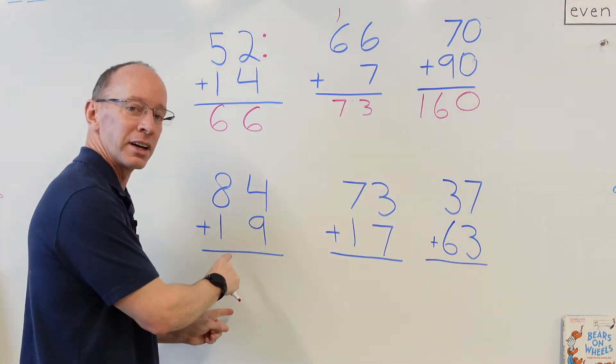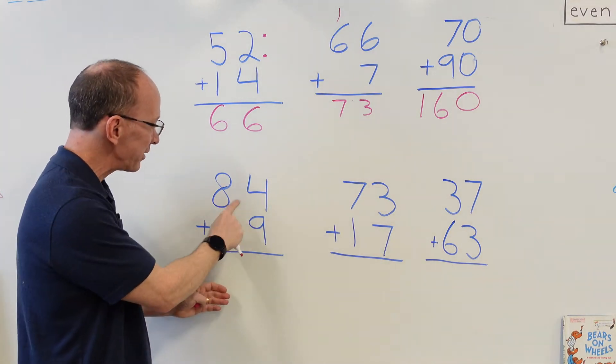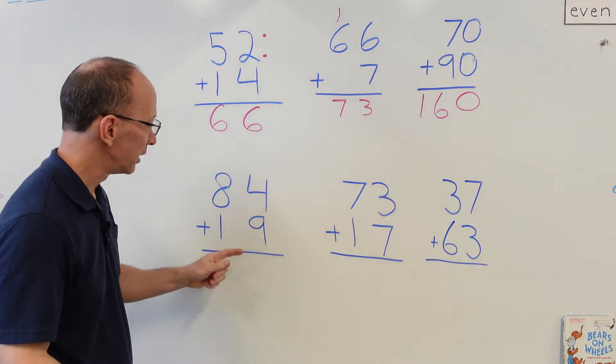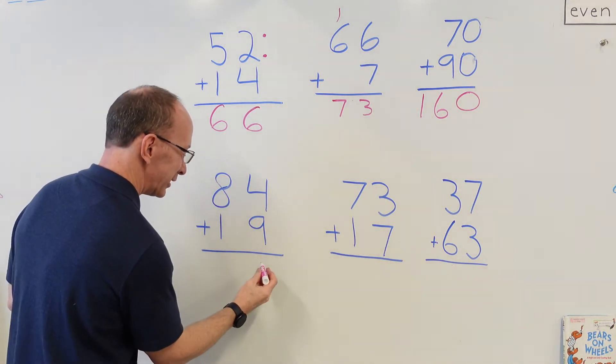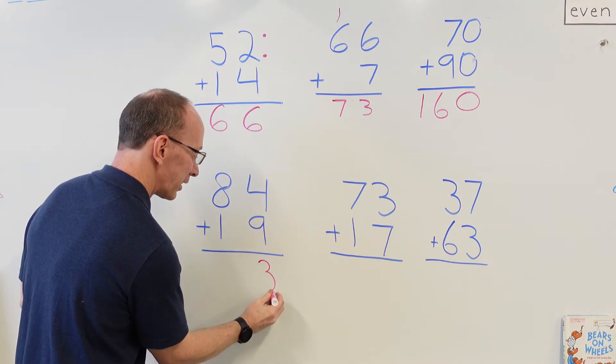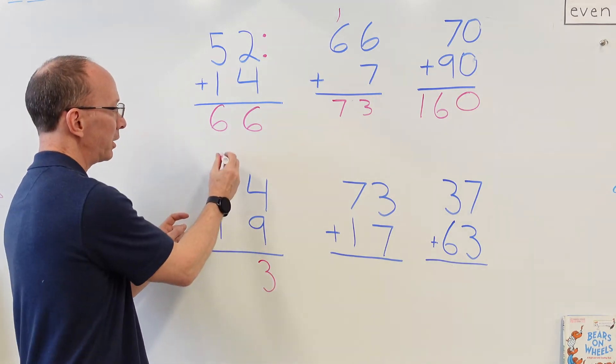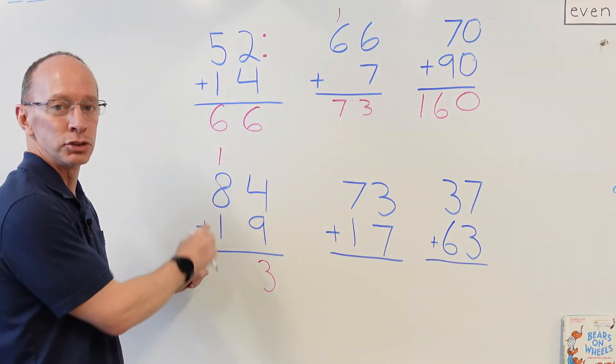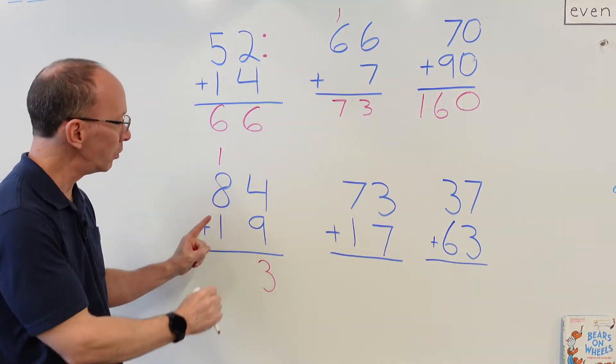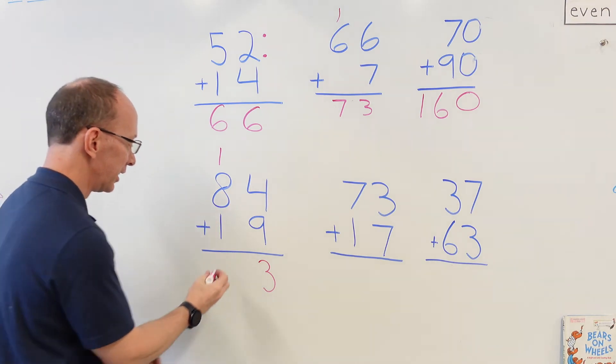All right, let's go on to our bottom problem here, 84+19. Remember, add the ones. Nine plus four: nine, ten, eleven, twelve, thirteen. So we put the three right here, we carry the one up here. And now we add the tens. Eight, nine. Don't forget about that one up there. Oh no, eight, nine, ten. So we write the 10 right there, 103.